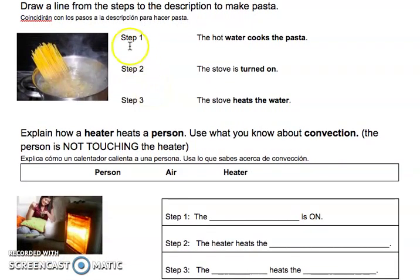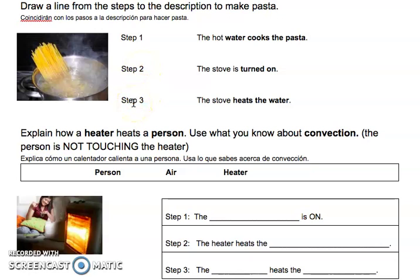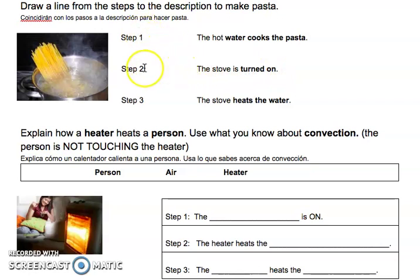We are going to be talking about convection. You are going to draw a line from the steps to the description to make pasta. We have spaghetti in a pot of boiling water. We need to find out what is step number one, step number two, and step number three. The hot water cooks the pasta — is that step one, step two, or step three? And the stove heats the water — which step is that?